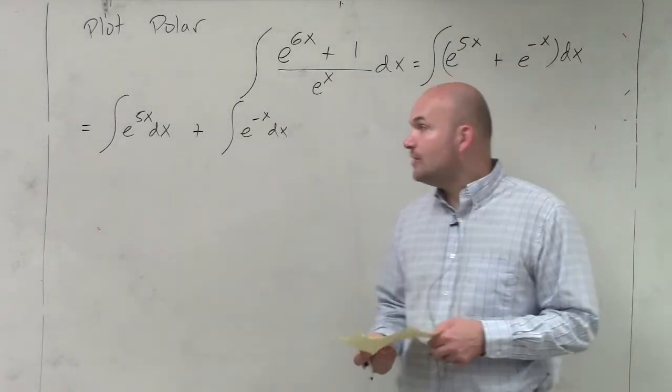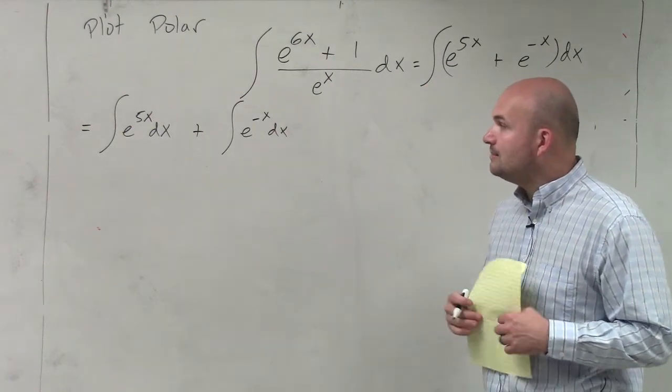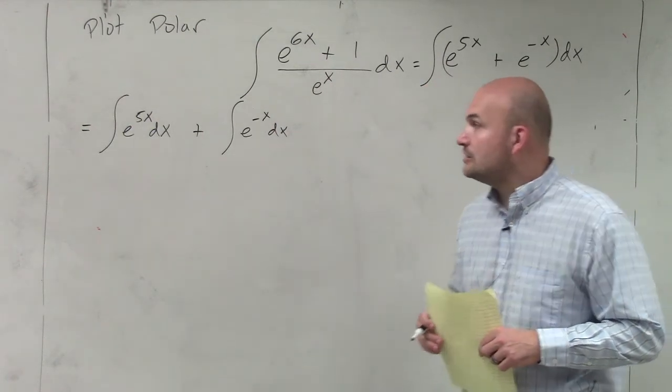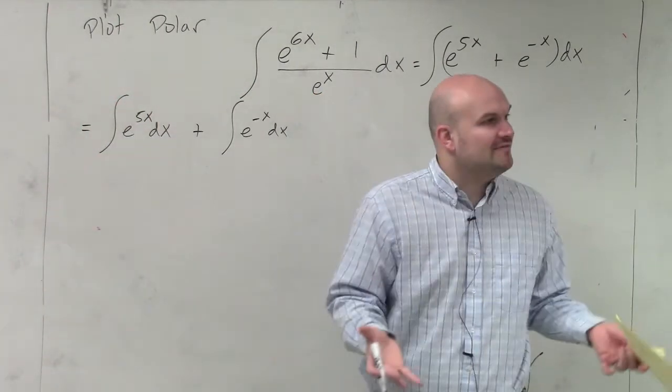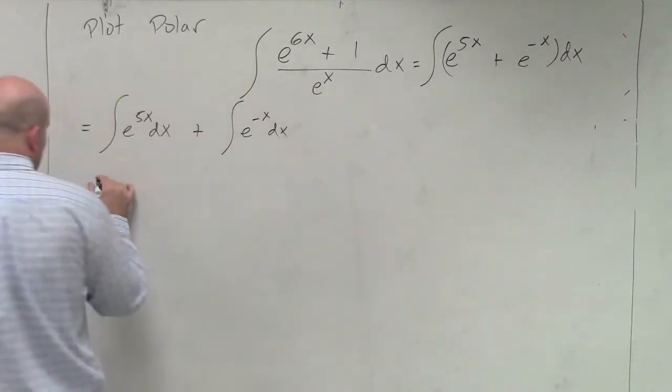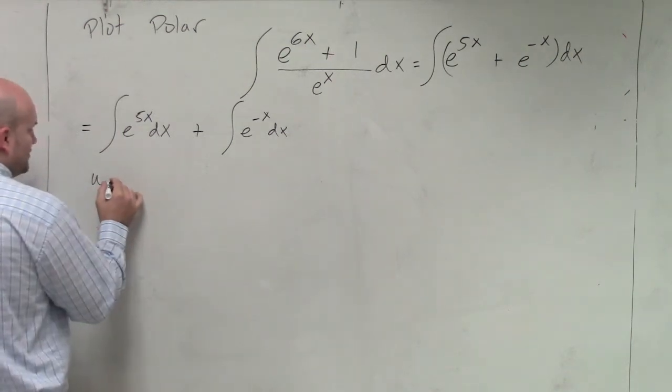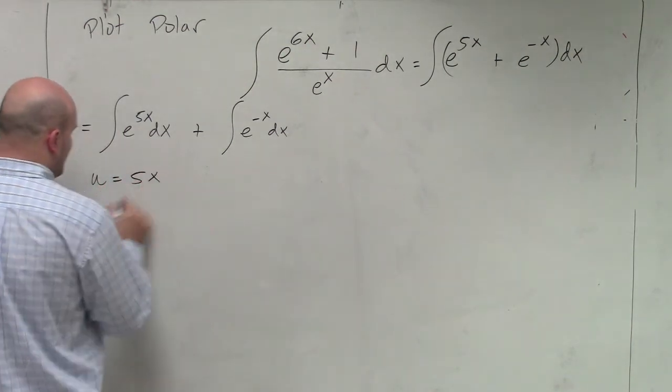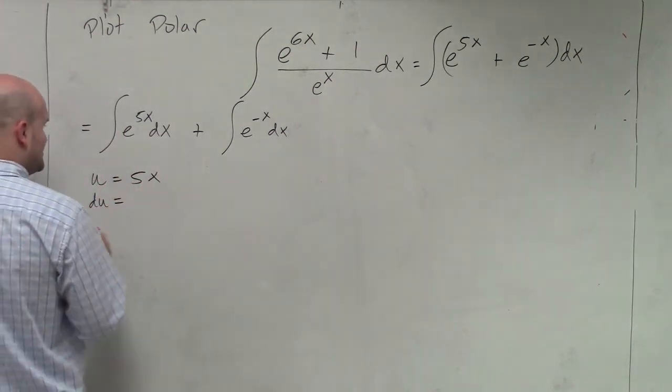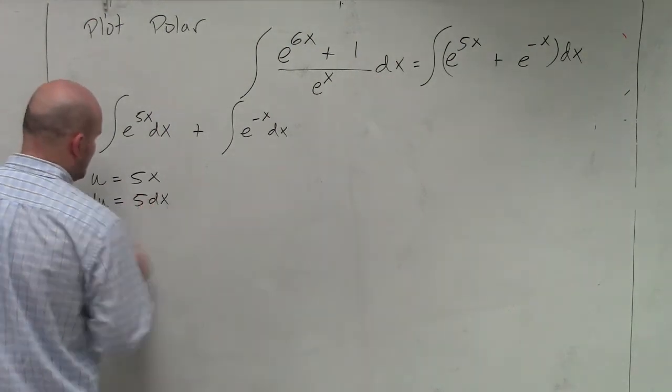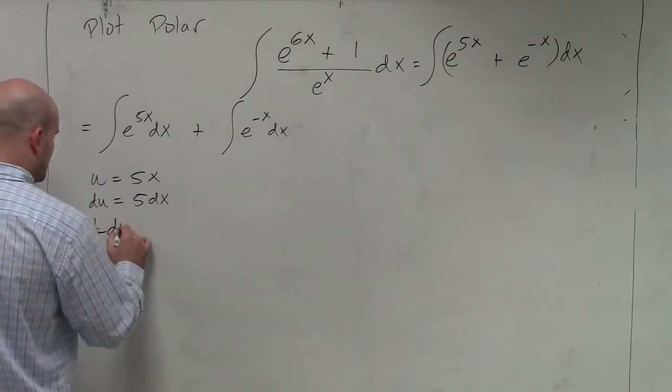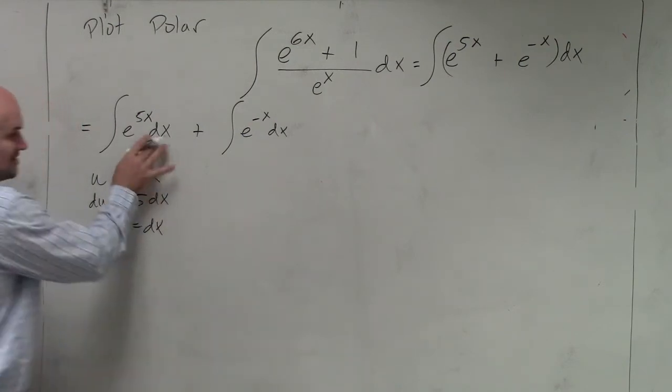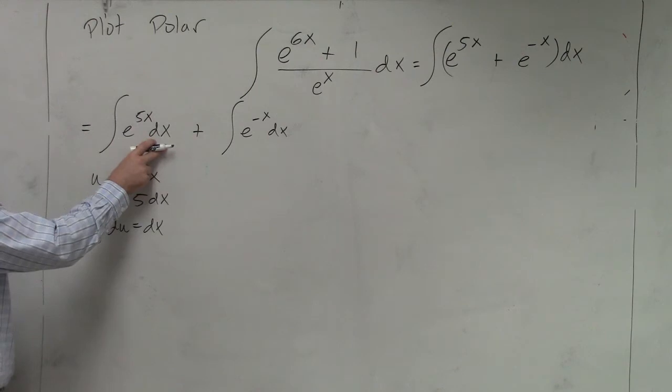But again, to go ahead and evaluate the integral, I'm going to have to use u-substitution. But now at least u-substitution is a little bit more obvious for us to identify. You could say here u is going to be equal to 5x. So du is going to equal 5dx. So therefore, I can multiply by one-fifth, du equals dx, because all I have is a dx, right? I don't have anything else.